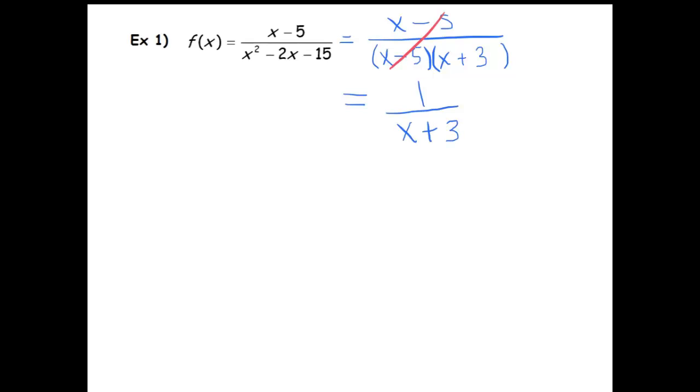And so we know, of course, that this graph has a hole. It has a hole at 5 comma, and when I plug 5 into the result here, I get 1 eighth. So there's where the hole is, and we know there's a vertical asymptote at x equals negative 3.